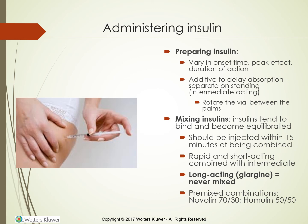Mixing insulins: insulins tend to bind and become equilibrated, so they should be injected within 15 minutes of being combined. Rapid and short-acting insulin combined with intermediate-acting insulin is possible. Long-acting glargine (Lantus) is never mixed. Pre-mixed combinations include Novolin 70/30 and Humulin 50/50.